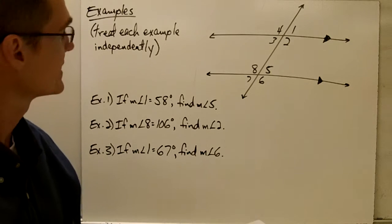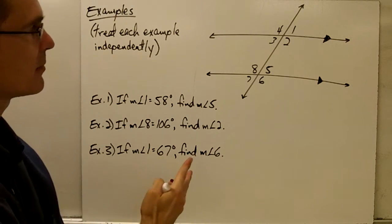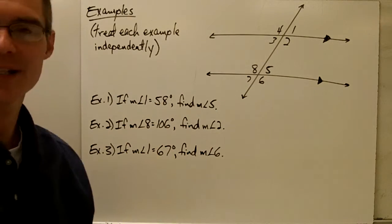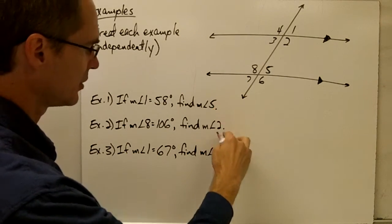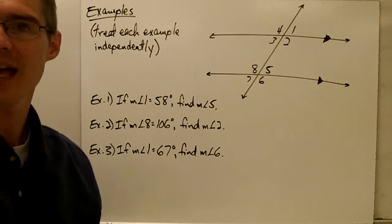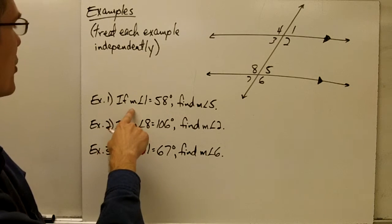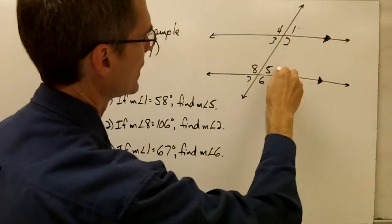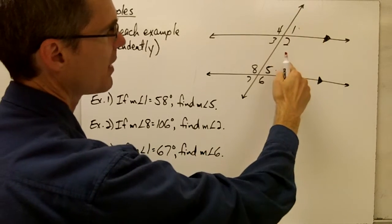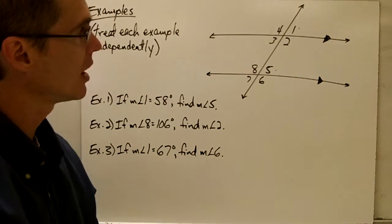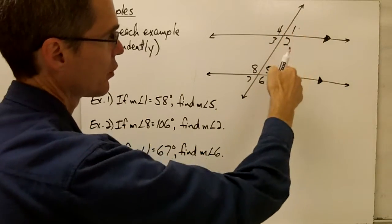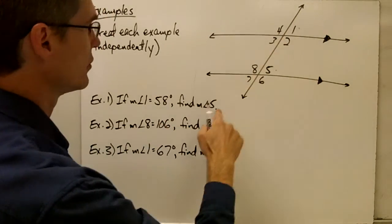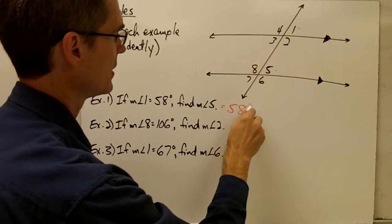On the last page of your notes there are some examples. Note that it says to treat each example independently — there's a single diagram of two parallel lines cut by a transversal, and you can use it for all examples, but each example doesn't depend on any of the others. Example one: if the measure of angle 1 equals 58 degrees, find the measure of angle 5. Angle 1 and angle 5 are corresponding angles. By the corresponding angles conjecture, if two parallel lines are cut by a transversal, then corresponding angles are congruent. So angle 5 must also be 58 degrees.